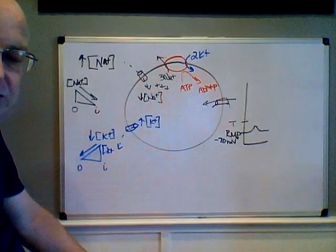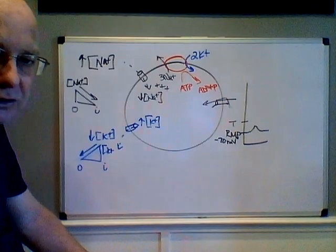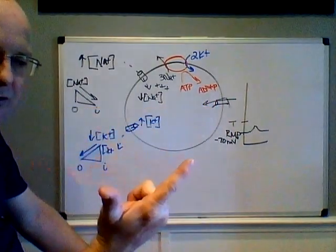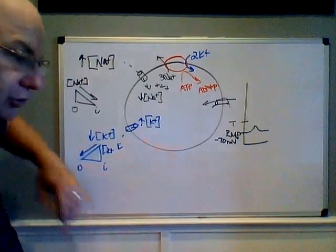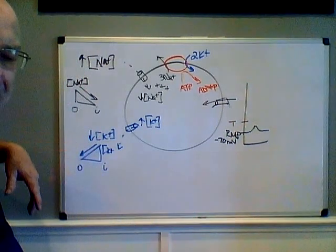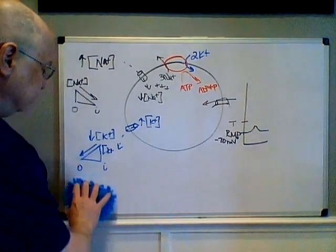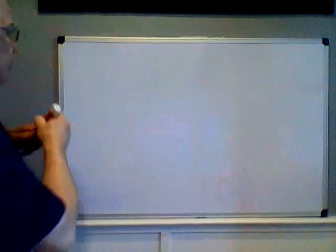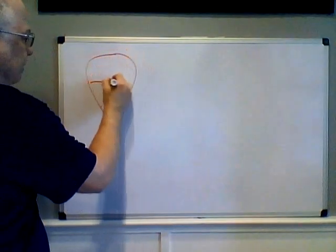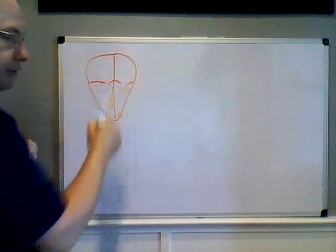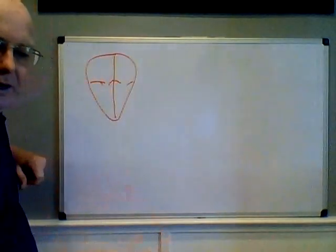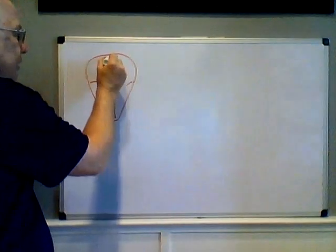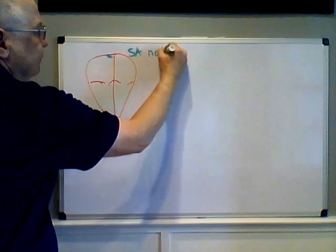Excitable cells — cells with gated channels that can conduct action potentials — include neurons and muscle cells: skeletal, smooth, and cardiac muscle. Now that we understand this principle, we're going to go into the conducting system of the heart and how the heart conducts its action potentials. The heart has a conducting system. There is an area up here called the SA node — the SA stands for sinoatrial node. Just like the picture I erased, the SA node has leaky sodium and potassium channels, sodium-potassium pumps, and even some gated channels.